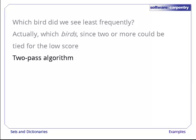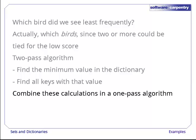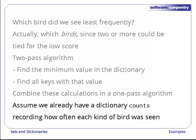One way to solve this problem is to do two passes over our data. In the first pass, we find the minimum value in the dictionary. In the second, we find all the keys that have that value. It's relatively easy to combine these operations, though, so we'll do the whole thing in one pass.